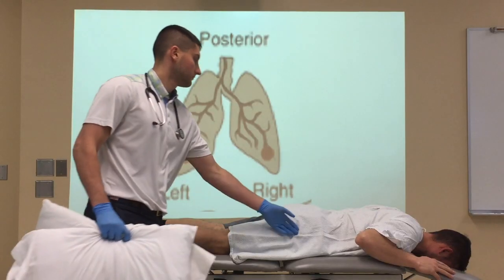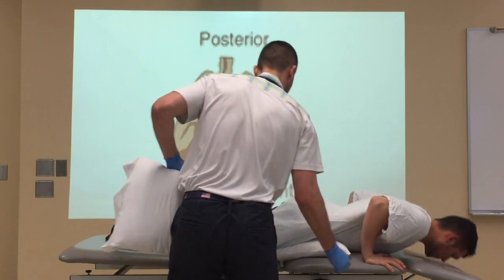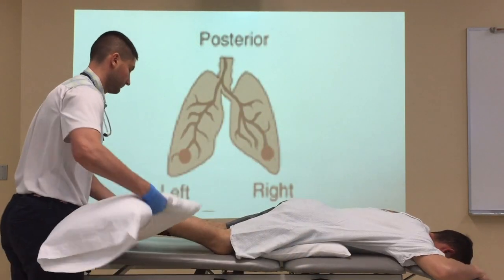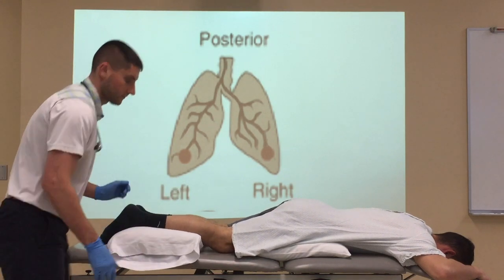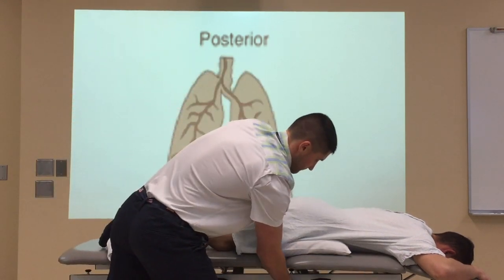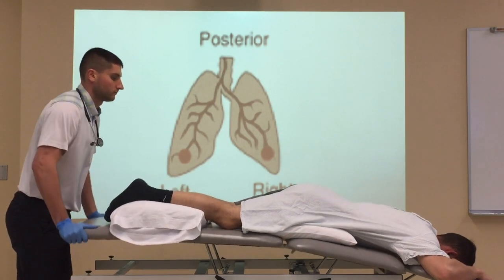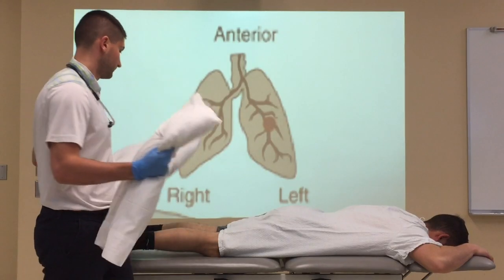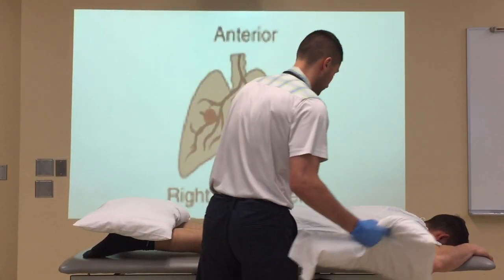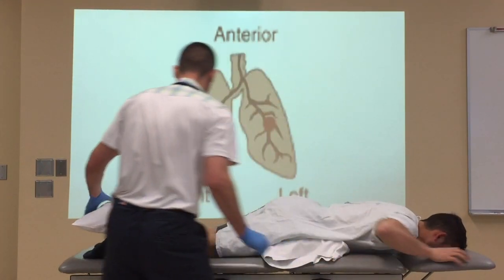For the posterior segments, your patient will be positioned prone with the table in 18 inches of Trendelenburg. Pillows are placed under the trunk and lower legs for comfort. Remember, patient modesty is important; therefore, clinicians should drape properly in all positions. For superior segments, your patient will be positioned prone on a flat table with pillows under the trunk and lower legs for comfort.